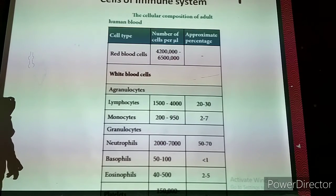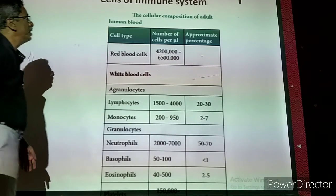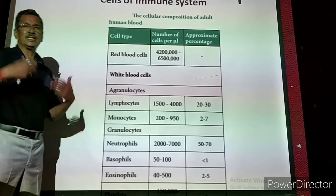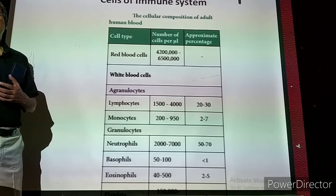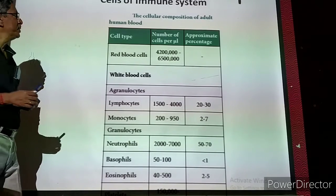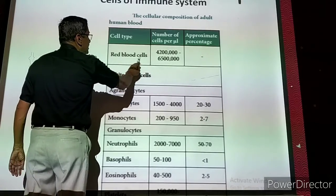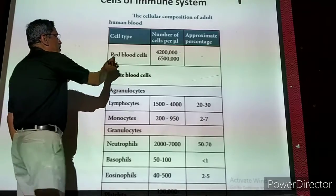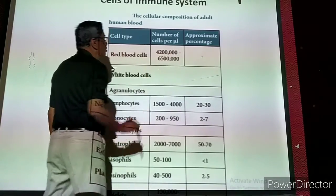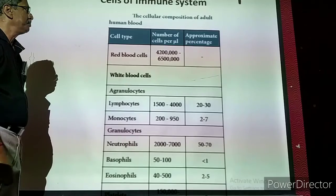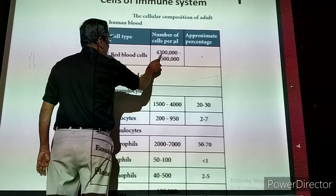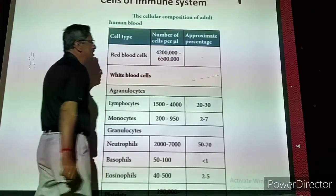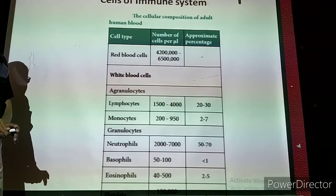Now we are going to study the cells of the immune system — the cellular composition of adult human blood. Red blood cells are present in large numbers but play a role mainly in blood group determination. The normal count is 4.2 million to 6.5 million cells per cubic millimeter.